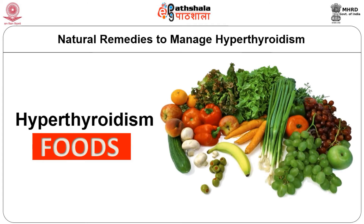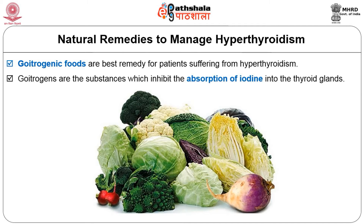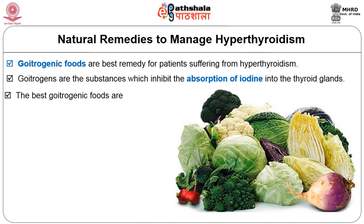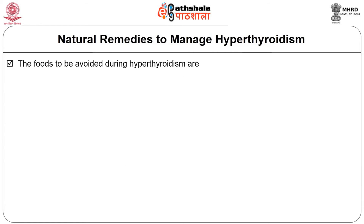Food is medicine. Some foods can help fight hyperthyroidism. Goitrogens are substances which inhibit the absorption of iodine into the thyroid gland and are the best remedy for patients suffering from hyperthyroidism. The best goitrogenic foods are broccoli, turnip, cauliflower, cabbage, radish, mustard, peanuts, mint, almonds, spinach, etc. The foods to be avoided during hyperthyroidism are artificial sweeteners.